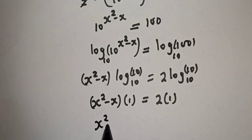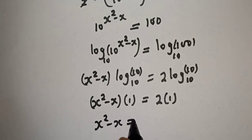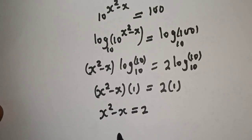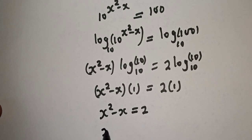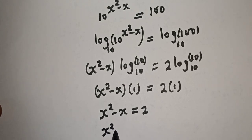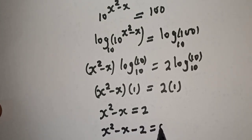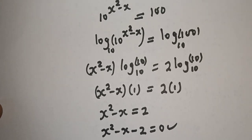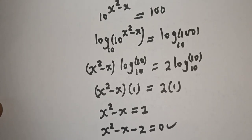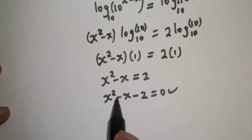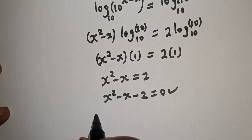So s²−s = 2, which gives us s²−s−2 = 0. This is a quadratic equation, and we can solve it using the quadratic general formula.